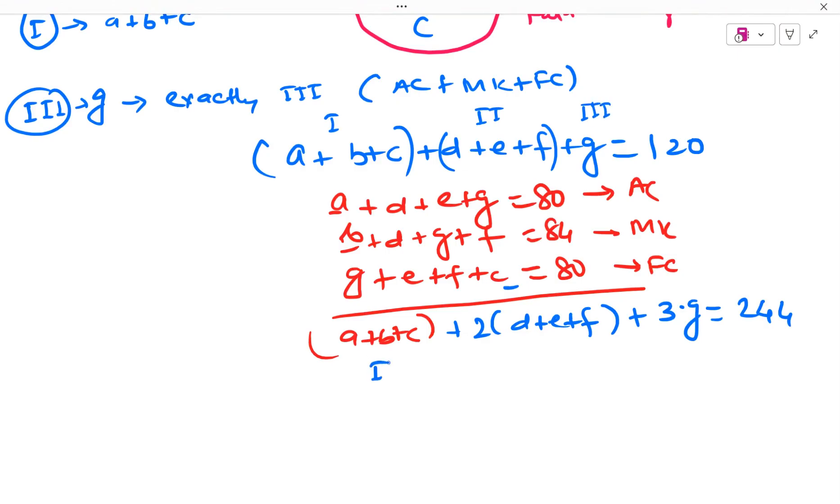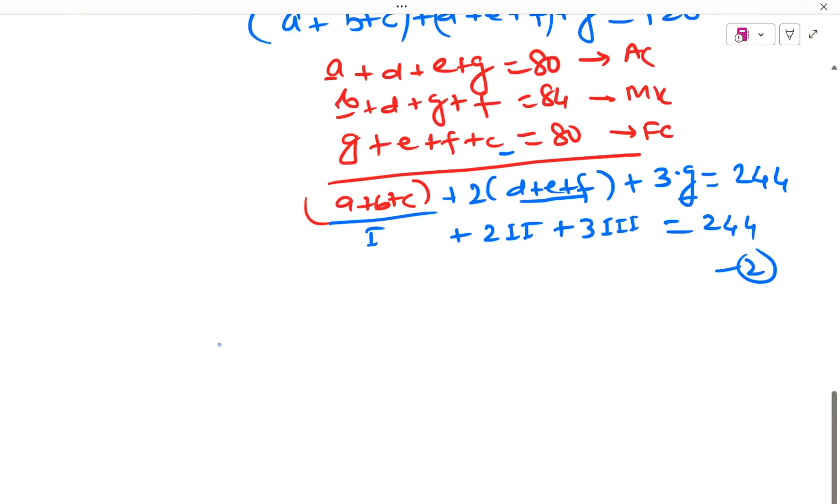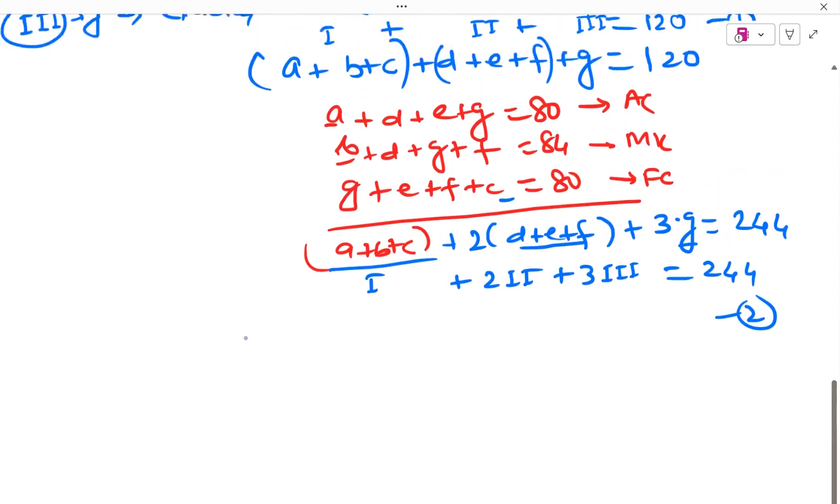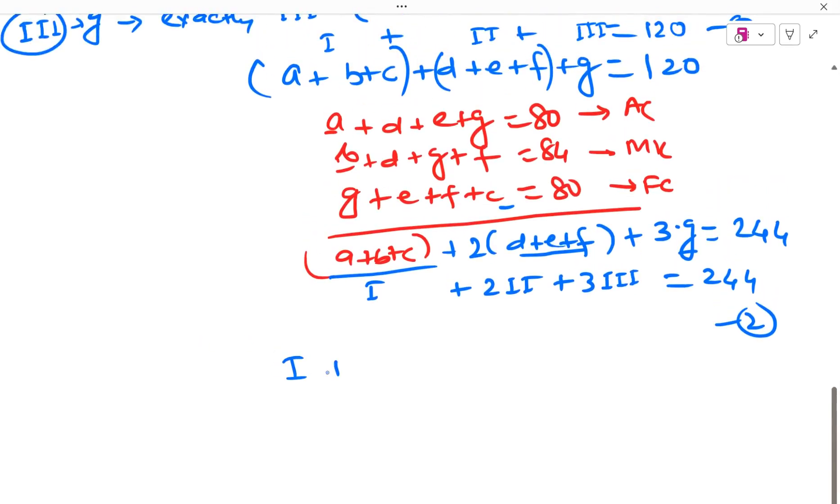Now let us denote these by some notations we have already assumed. So 1 is A plus B plus C. 2 is D plus E plus F. And G is 3. Similarly, I will denote these also by 1 plus 2 of 2 plus 3 of 3. So this is 244. This is my equation 2 and this is my equation 1. The equation 1 can be written as 1 plus 2 plus 3 equal to 120. So now I have two equations.